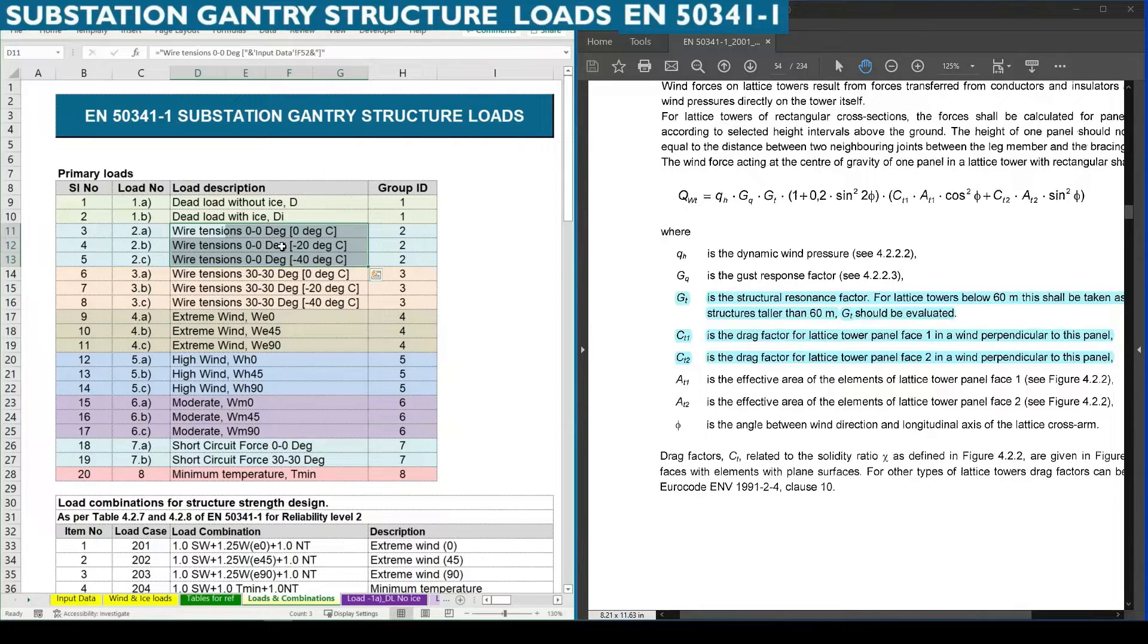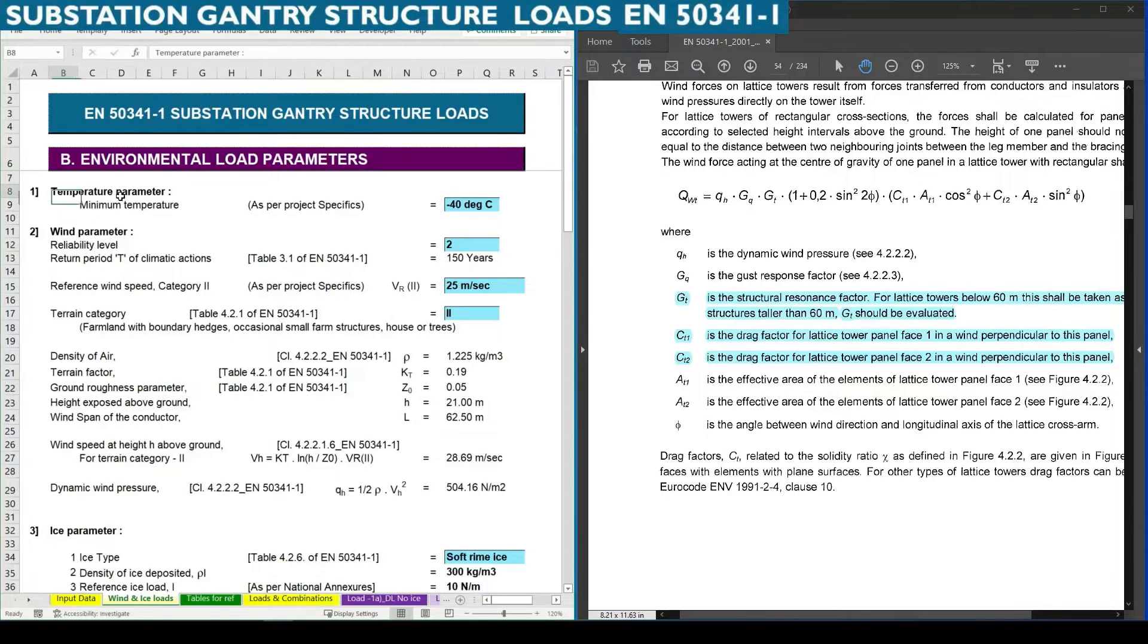For that we need to calculate in various temperatures, that is mainly for three temperatures. This is required as per the European standard: for zero degree temperature we need to calculate the wire tension, for minus 20, and for minus 40 which is a minimum design temperature which we had defined here based upon the technical specification.